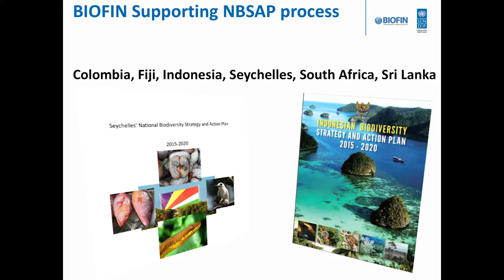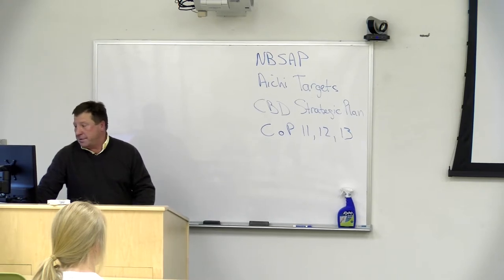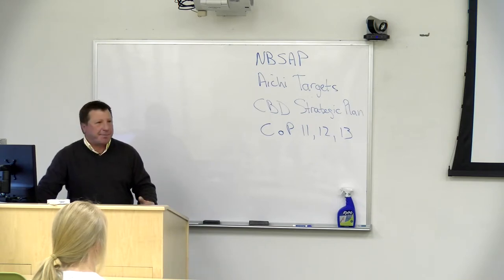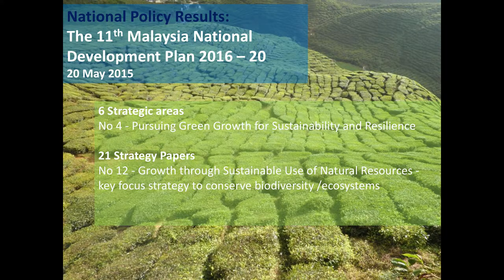The PIR is supporting NBSAPs in most countries, particularly Colombia, Fiji, Indonesia, Seychelles, South Africa, and Sri Lanka — though one of our South African partners, the Minister of Finance, resigned this morning, which is not good. In Malaysia, they don't use the NBSAP — they use their national development plan, the 11th plan for 2016–2020, which is now fully integrating investments in biodiversity, natural capital, and resource management toward economic development goals.